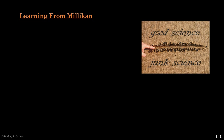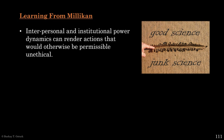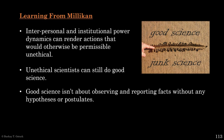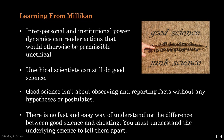Can Millikan's story teach us anything useful about differentiating good science and junk science? First and foremost, unethical scientists can still do good science — even though Millikan exploited his student, the results he reported are as accurate as they get. Second, interpersonal and institutional power dynamics can render actions that would otherwise be permissible unethical. What is more, good science isn't about observing and reporting facts without any hypotheses or postulates — once again, we see that inductivism doesn't work. Finally, there is no fast and easy way of understanding the difference between good science and cheating: you must understand the underlying science to tell them apart. Thank you for your patience and I'll catch you next time.